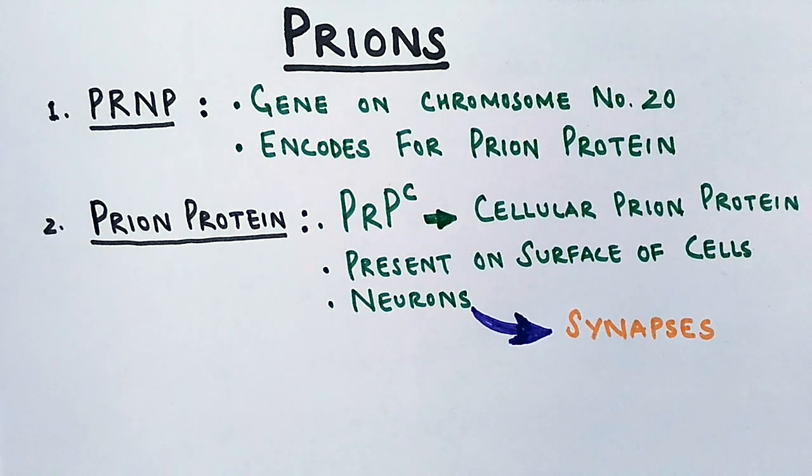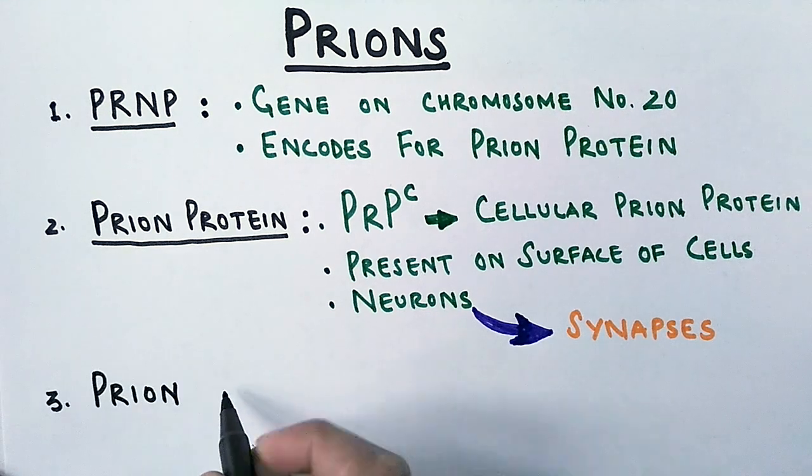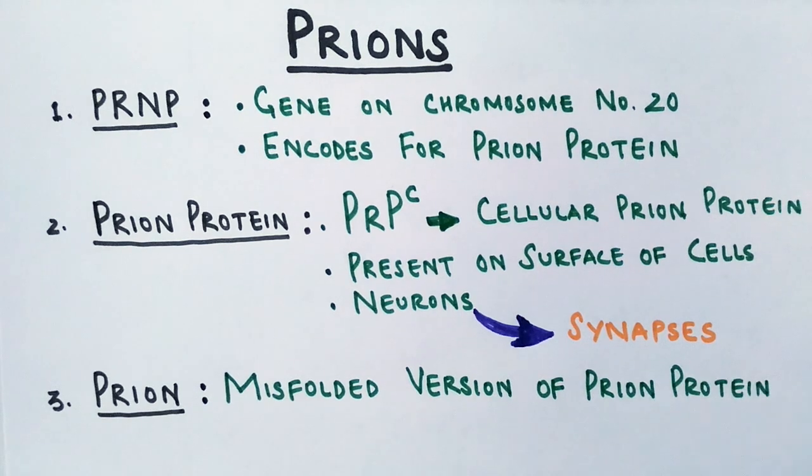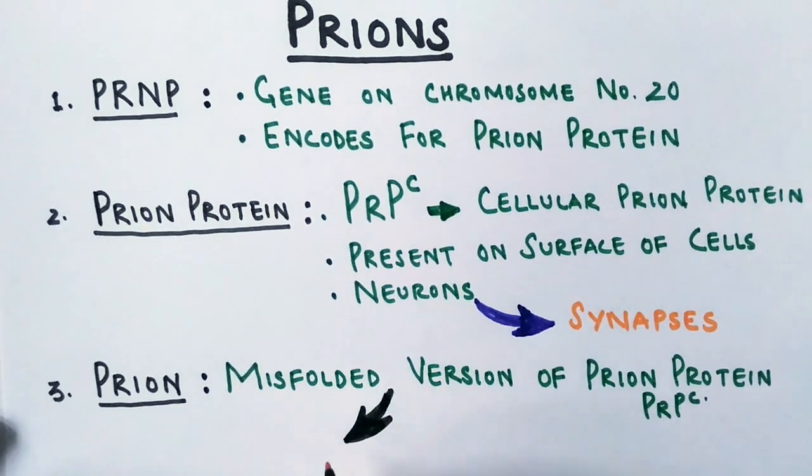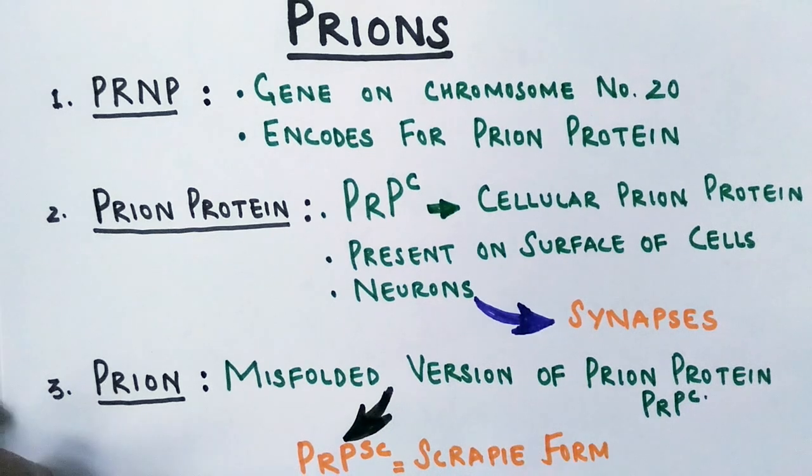So they have this type of function, and ultimately we can understand what prion is. Prion is a misfolded version of prion protein, misfolded version of PrP^C, and the misfolded version of PrP^C is denoted by PrP^SC. Why SC here? Because it's a scrapie form that is related to the disease which was discovered later on, scrapie disease in sheep. That's why it's called PrP^SC, prion scrapie form protein.